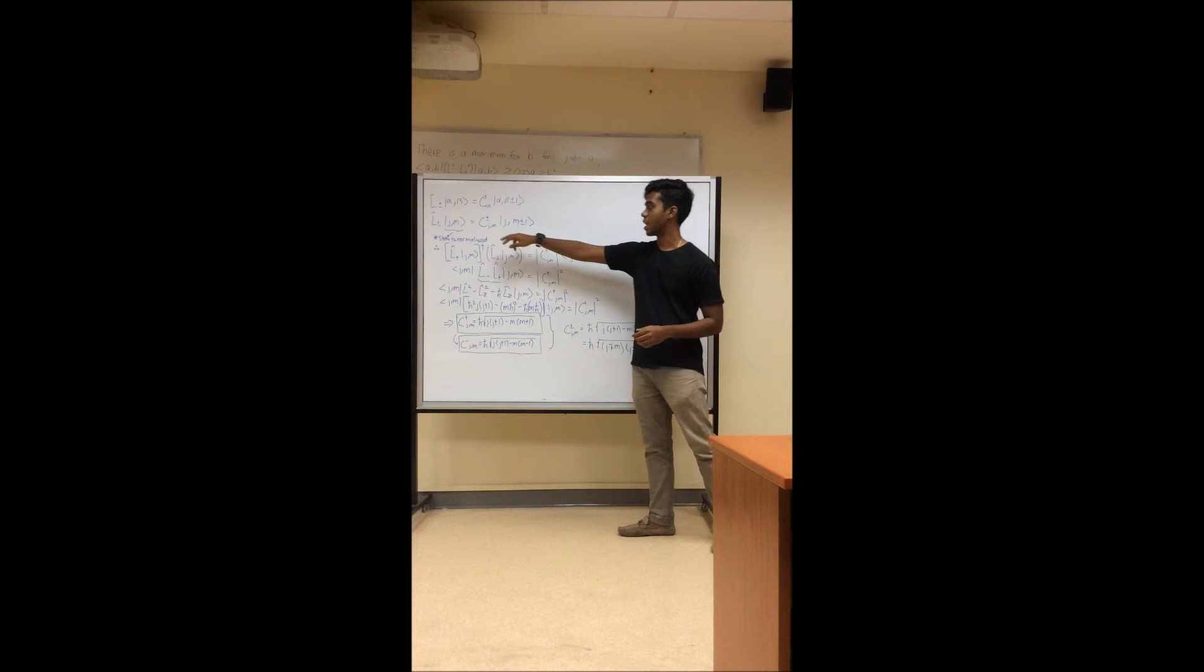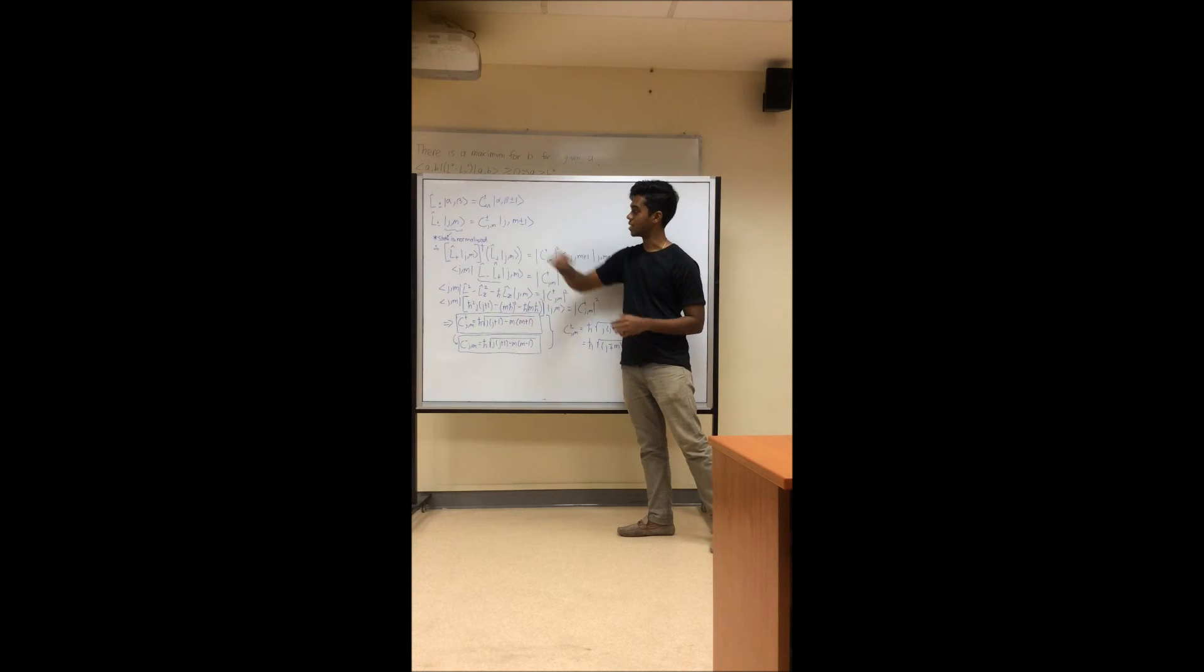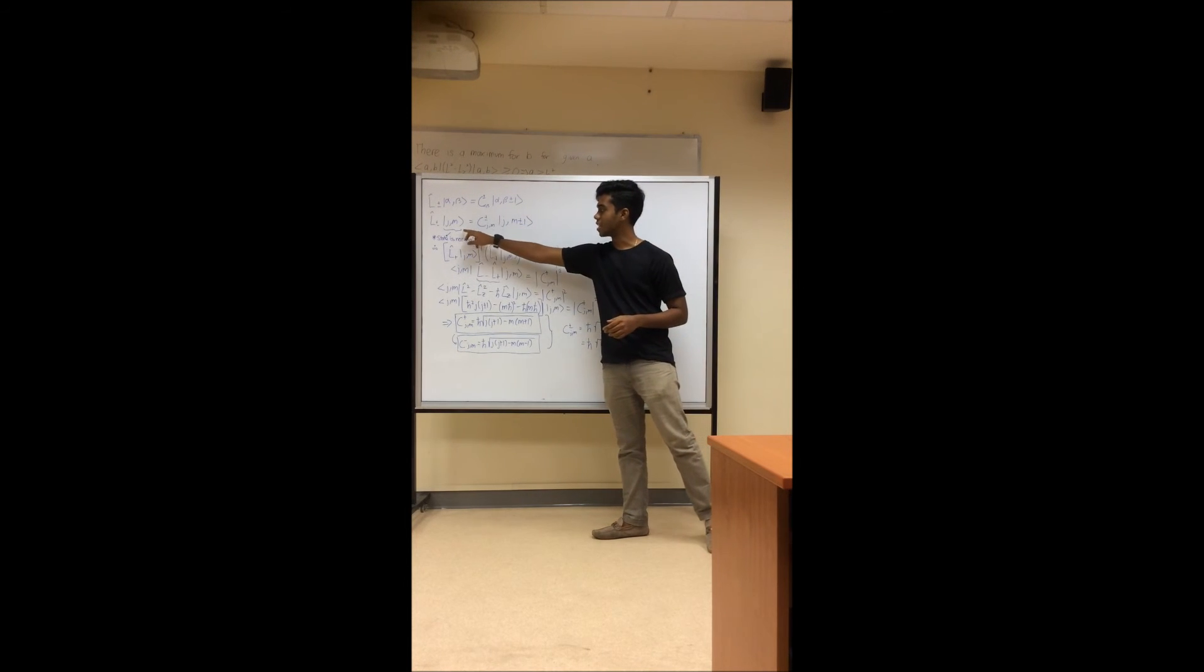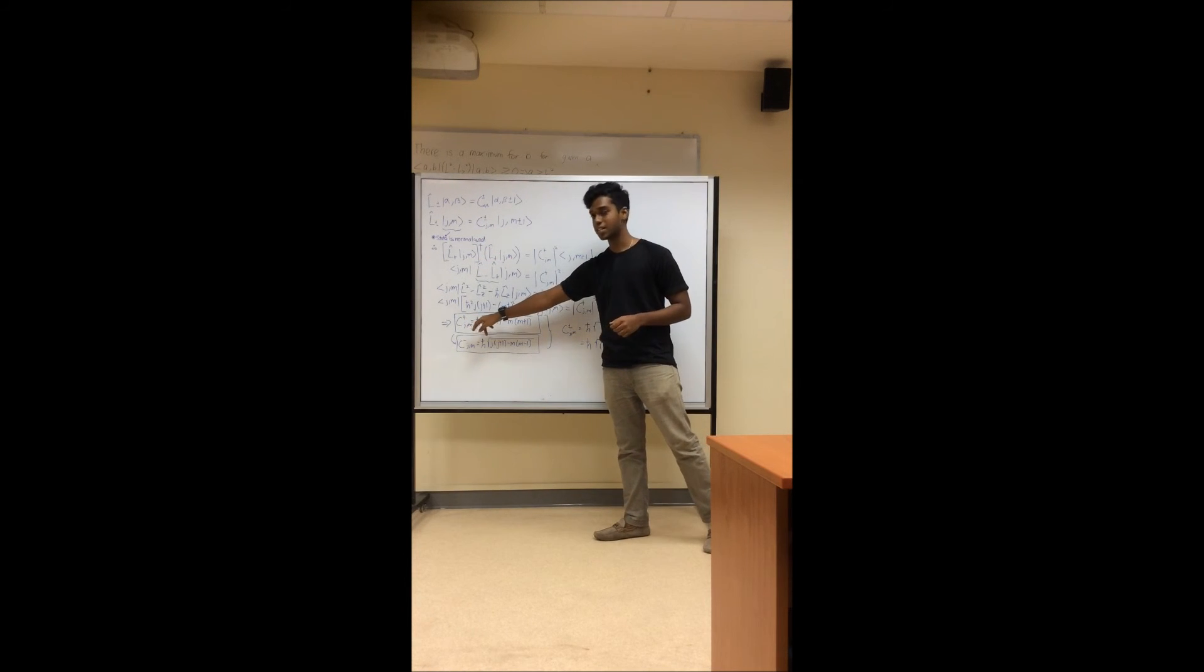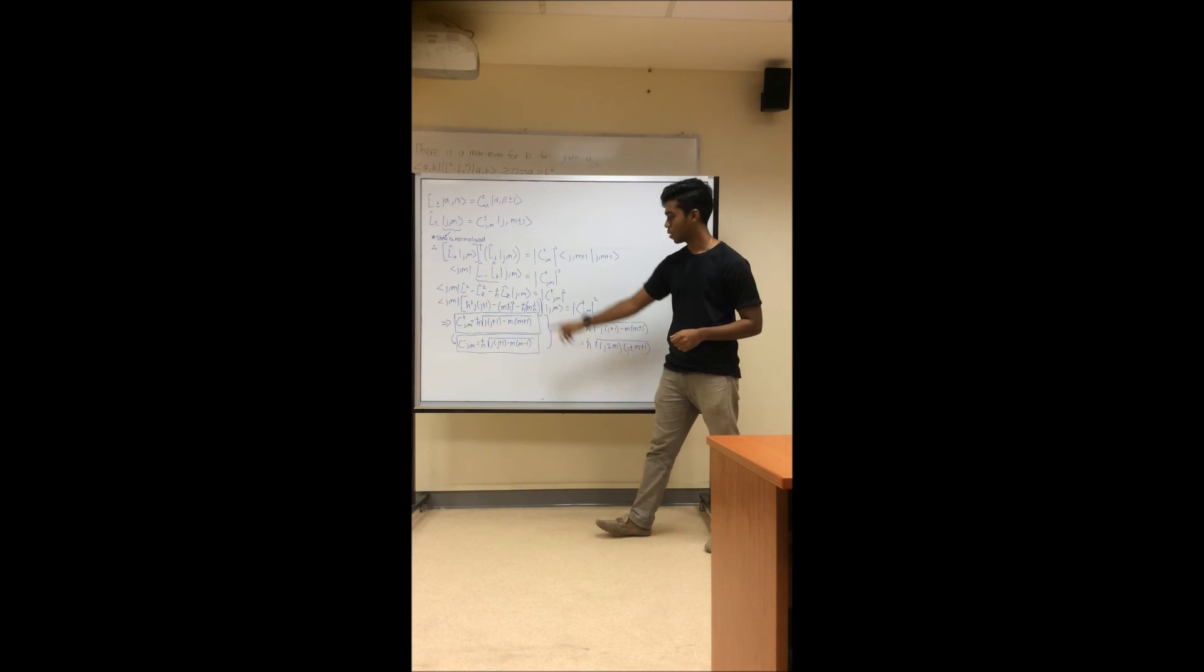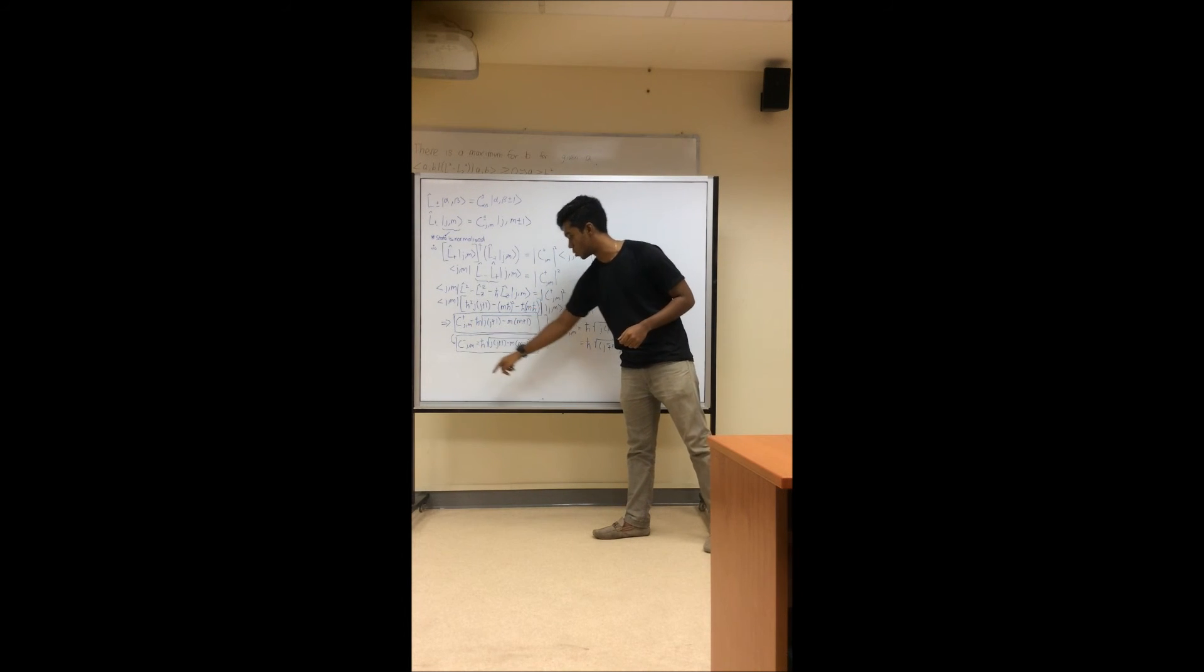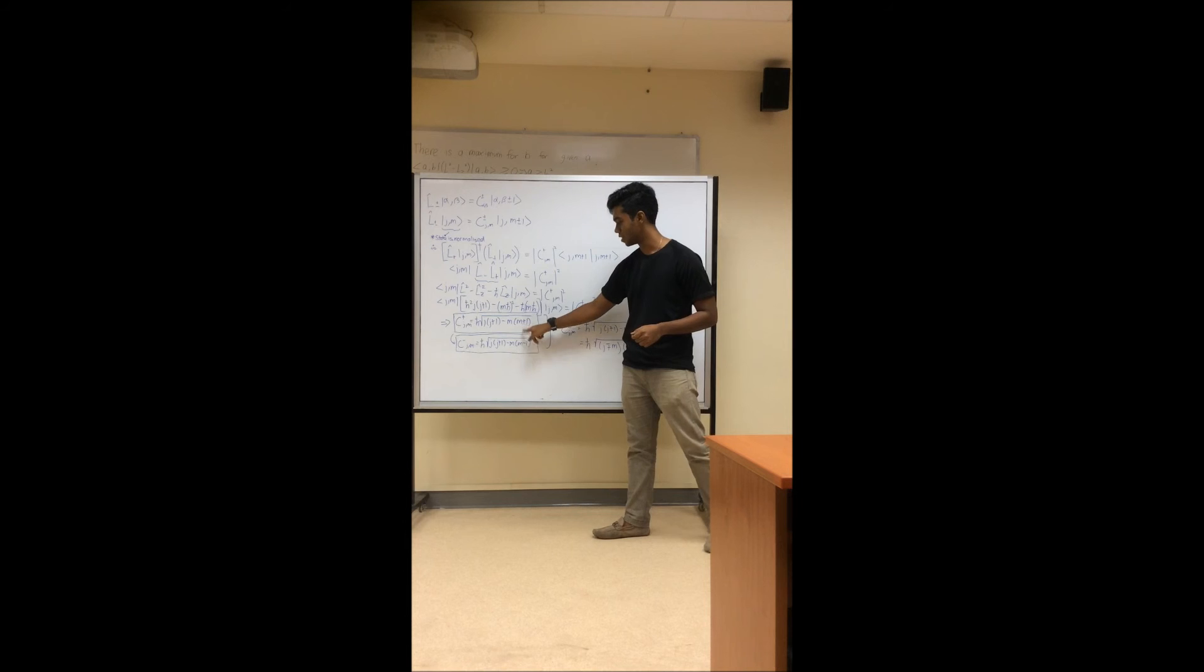Griffiths goes a step further and actually finds the eigenvalues of the step-up operators L plus and L minus. So since given that this state is normalized, and we use Hermitian conjugate and using simple math, you can actually find the eigenvalues of L plus, which is given as C plus. And from there, we can infer C minus as well, which is given just the minus sign of this.